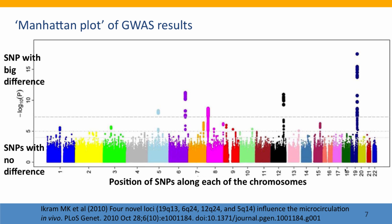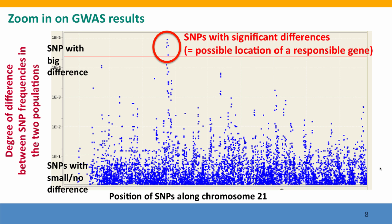Now we can zoom in on this. It's hard to appreciate looking at the whole genome how many SNP positions we're looking at, so we can zoom in on a single chromosome. We're going to zoom in on chromosome 21, which is one of the smallest chromosomes. Here's what we see when we just look along chromosome 21 — every dot is a SNP position, and you can see how many SNPs there are even just on chromosome 21. Circled in red are some SNPs where the statistical analysis says these differences are likely to be significant, suggesting they may be locations of a gene responsible for part of the difference in height or whatever phenotypic property we're studying.